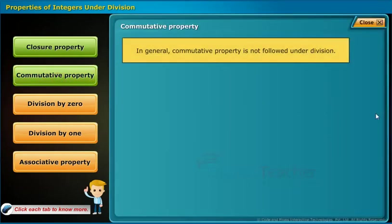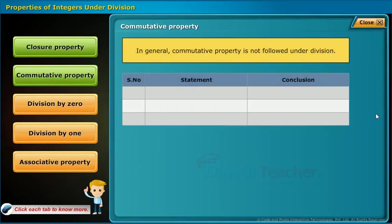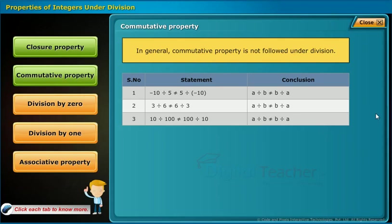Commutative property is not followed under division. For example: minus 10 by 5 is not equal to 5 by minus 10, concluding that a by b is not equal to b by a. The remaining two statements similarly fail. Therefore, commutative property is not followed under division.